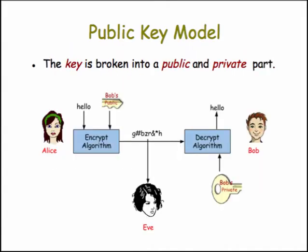Here's the public key model that it uses. The cryptographic key is broken into two parts — a public and a private part. The public part is used for encrypting, so Bob's public key is used by Alice to encrypt the word "hello," running it through the encrypt algorithm, and then sending the result — this gibberish here — over to Bob. He uses the private part of his key to decrypt the gibberish and retrieve the word "hello."